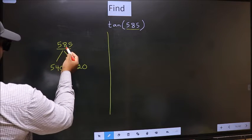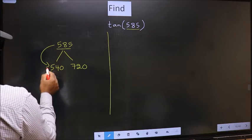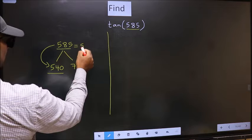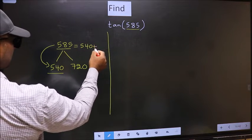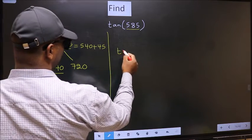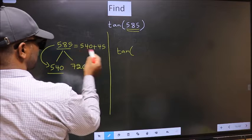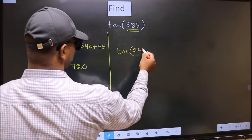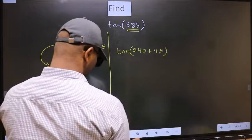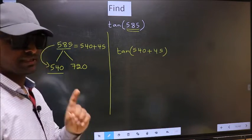Next, 585 is close to which number? This is close to 540. So, in place of this, now we should write 540 plus 45. So, this will become tan. In place of this, we write this: 540 plus 45. This is your step 1.